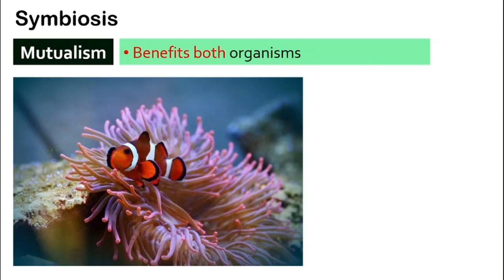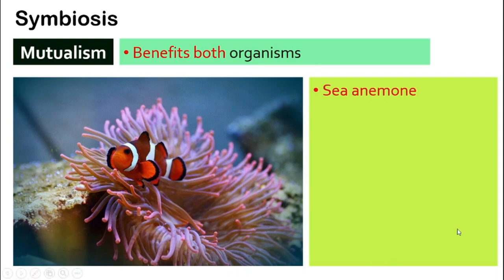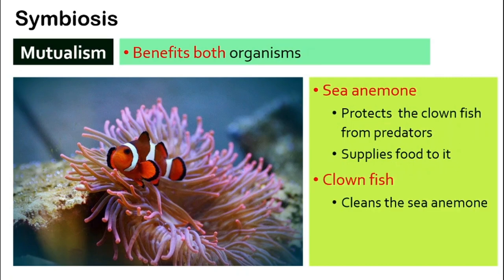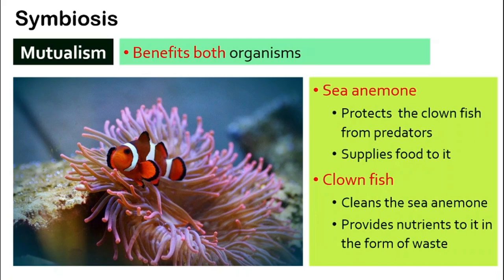One example is Nemo fish — the actual name is clownfish. Clownfish normally live together with sea anemone, and both of them are very happy. The sea anemone will protect the clownfish so other bigger fish cannot eat it, and also supply food for the clownfish. The clownfish helps by cleaning up the sea anemone and provides nutrients in the form of waste, meaning it actually fertilizes the sea anemone.